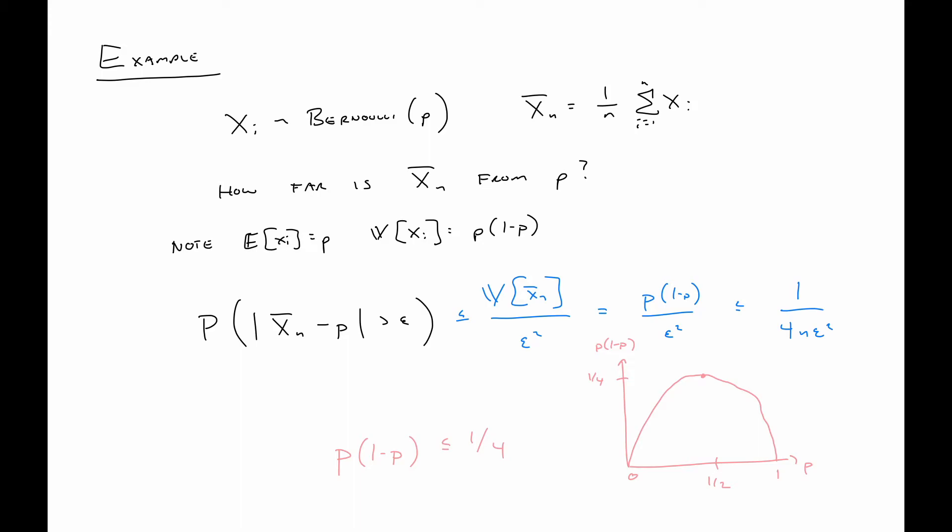So what this says is the probability that X bar n is some distance away from the true mean is at most one over 4n epsilon squared, where again epsilon is that distance, that error we're considering. But the real nice thing here is that we have this n here in the denominator, and that's great because that means that the larger the sample size is, the smaller this probability is. In particular, if we let n go to infinity, this probability vanishes to zero, which is saying that with enough data, the sample mean probabilistically is very close to the true mean. That's a sneak preview of what we're going to talk about in the next video.